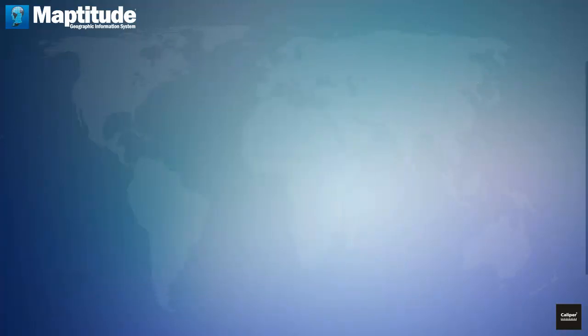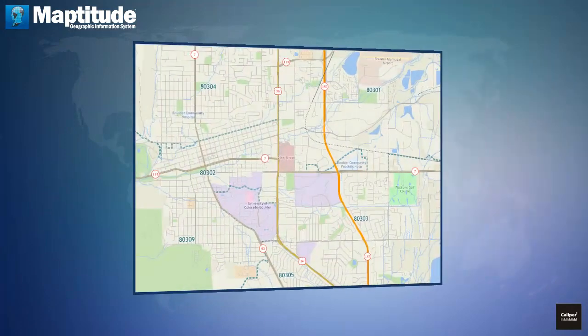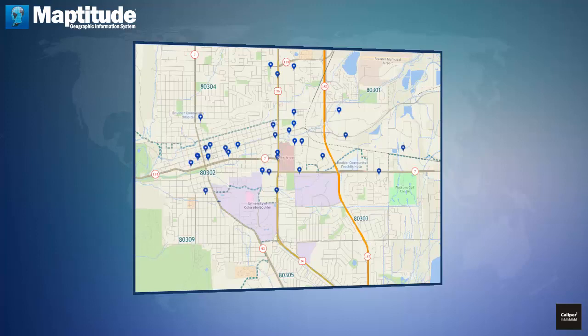Maptitude also contains powerful location intelligence tools, giving you a deeper understanding of the geographic relationships in your data. Create pin maps by address, postal code, coordinate and more, for unlimited numbers of records and with all of your data attached.